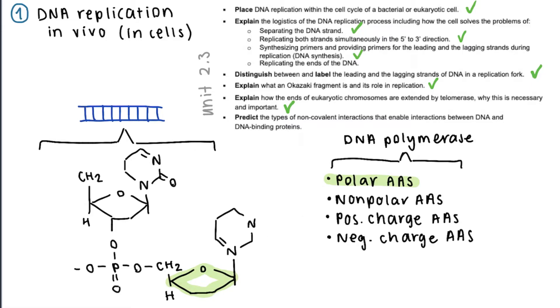The nitrogenous bases, so adenine, thymine, cytosine, and guanine are non-polar. So with a non-polar amino acid they could form, for example, an ID-ID interaction.